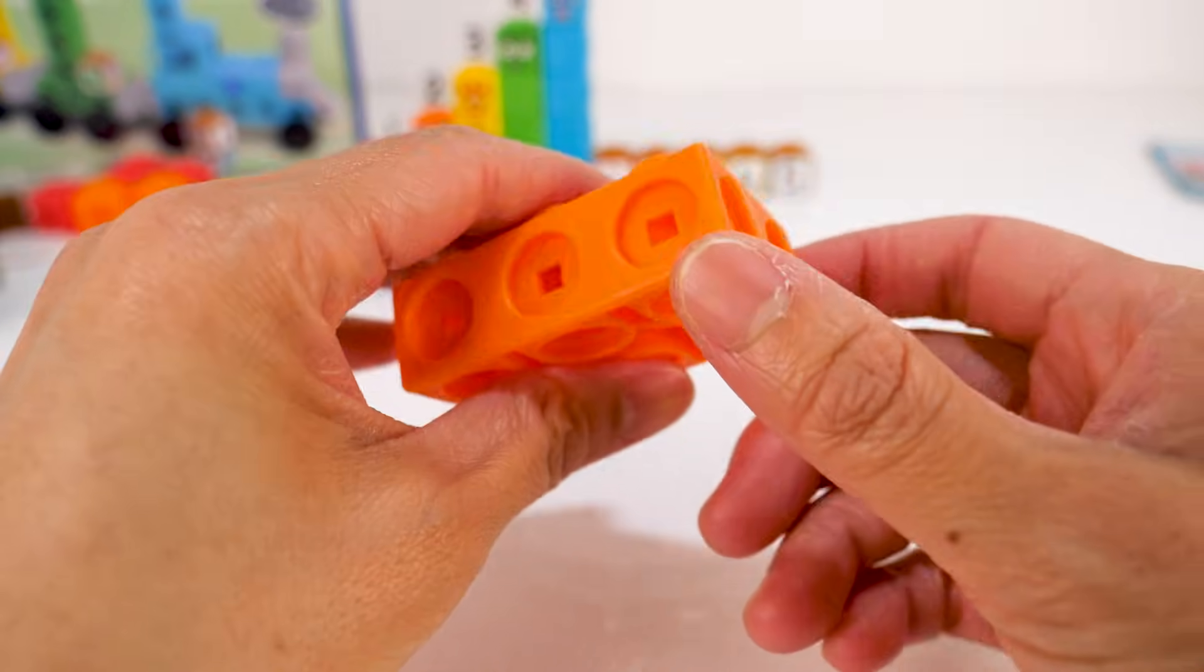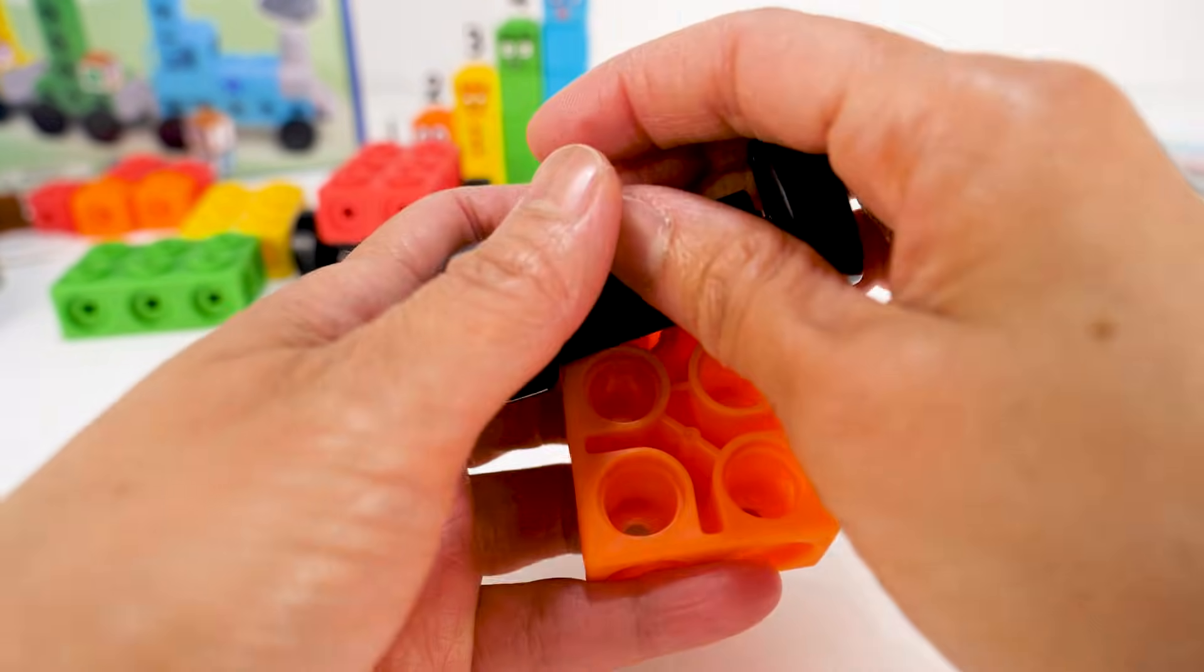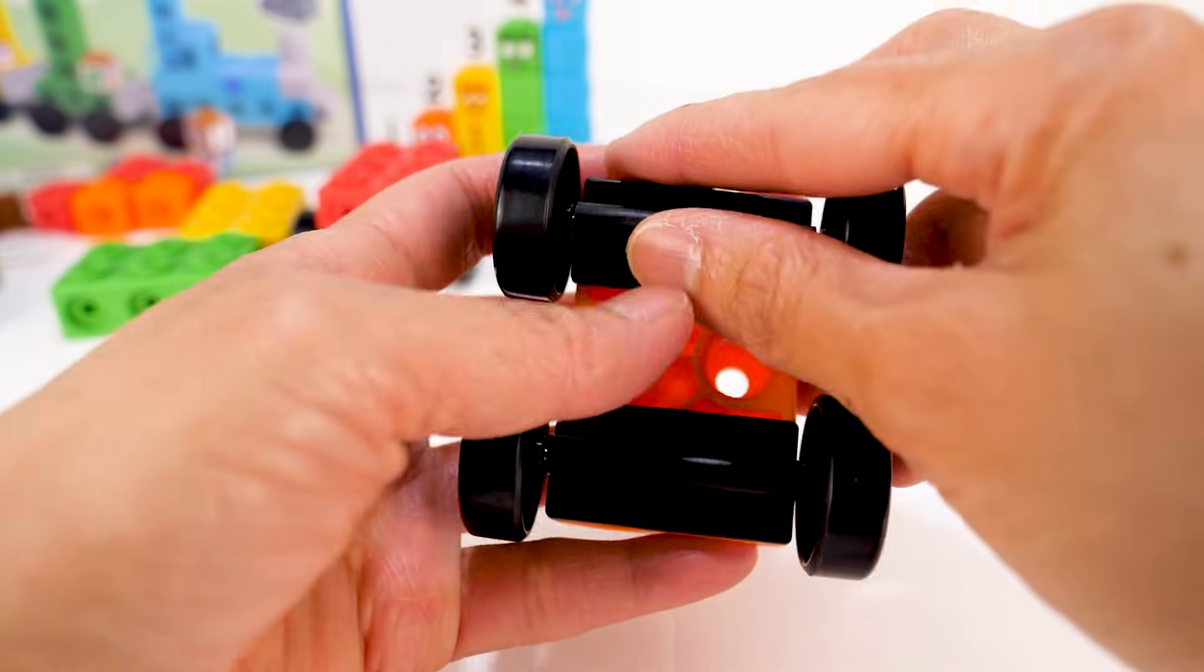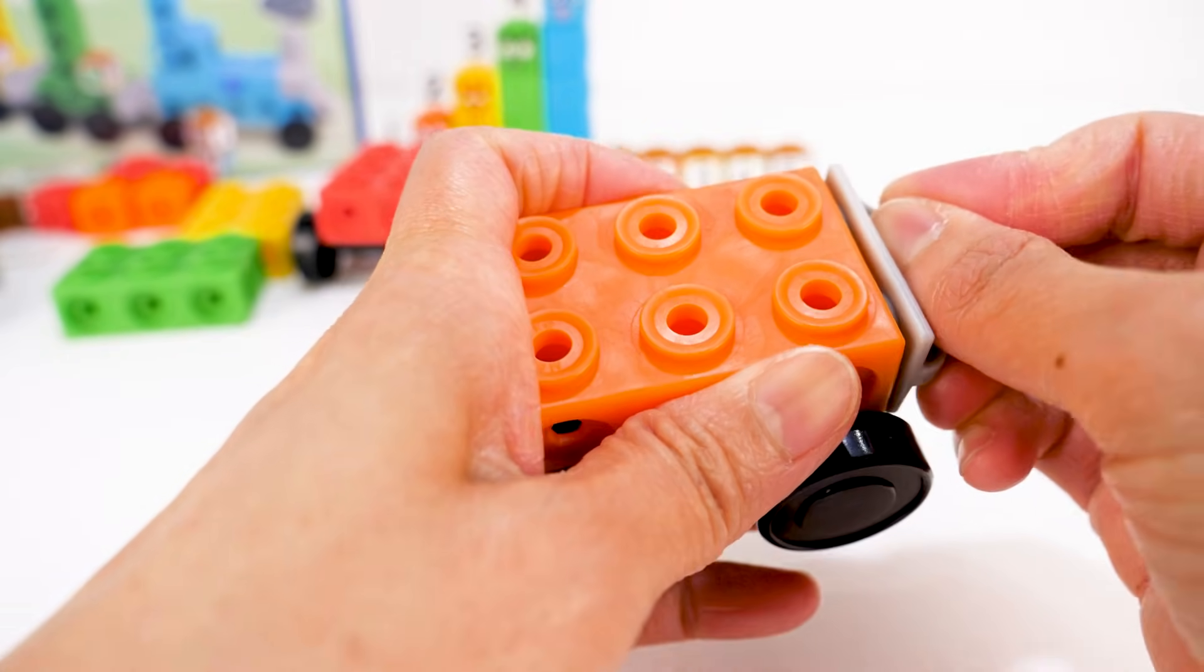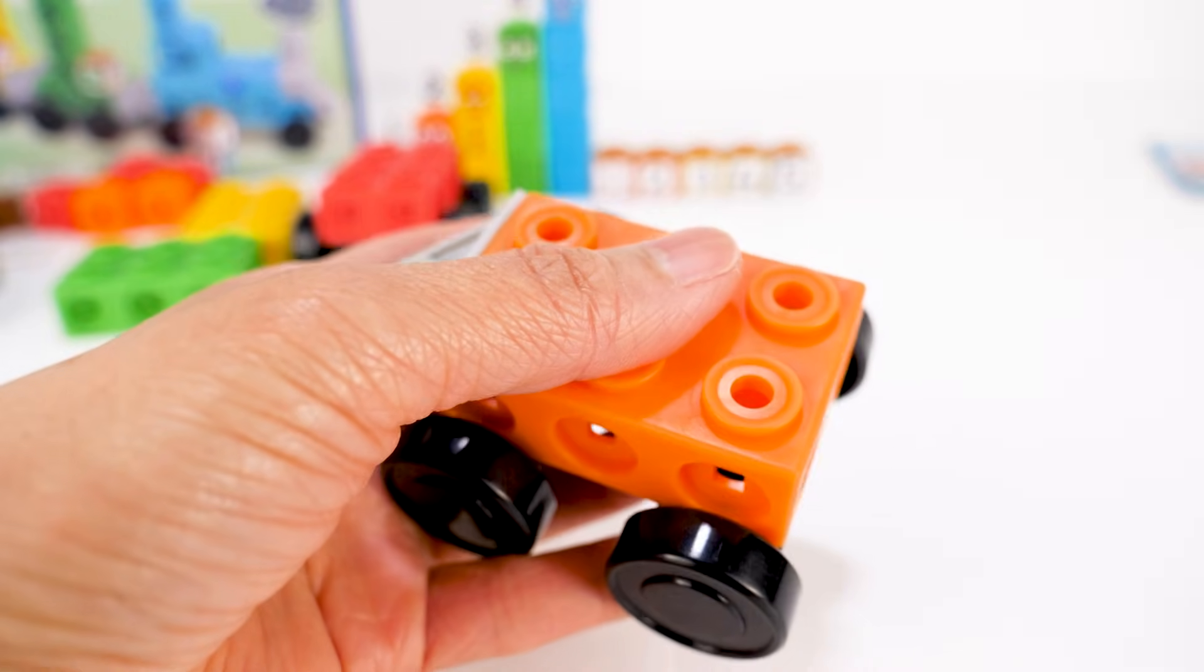Next, we'll build the orange base. The wheels, then the two connecting pieces, one at the front and one at the back.